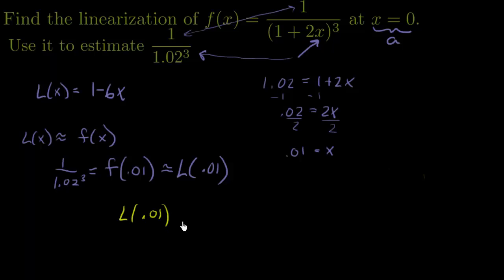L(0.01) is going to be 1 minus 6 times 0.01, which is just 1 minus 0.06, which is 0.94, which is perfect.